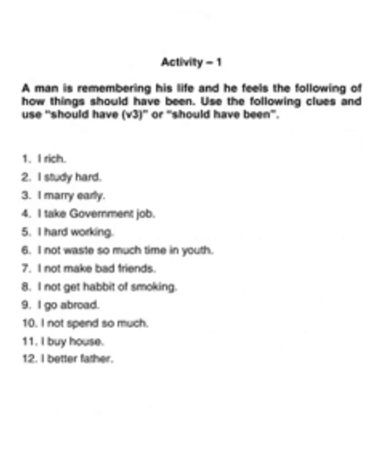Now let's do one activity. A man is remembering his life and he feels how things should have been. Use the following clues and use either should have V3 or should have been. First one: should I say 'I should have rich' or 'I should have been rich'? Rich is not a verb, so the right answer is: I should have been rich.